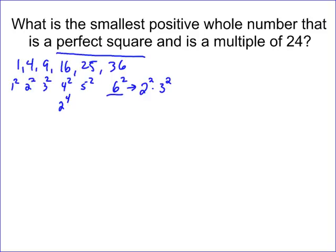If something is a multiple of 24, that means inside the number there has to be the prime factors of 24. In this case, the prime factors of 24 are 2 times 2 times 2 times 3, which is 8 times 3. So it's going to be 2 to the 3rd times 3 to the 1st.